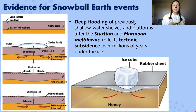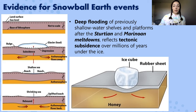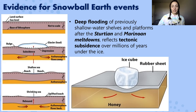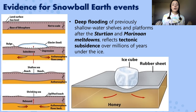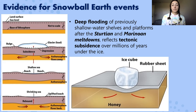The last piece of evidence is subsidence. Deep flooding of previous shallow water shelves and platforms after the Sturtian and Marinoan meltdowns suggests tectonic subsidence due to having been covered in ice for millions of years. This is expected — we already know that glaciers are strong enough forces to carve valleys and cause depressions in continental crust that later become filled with lakes, so seeing this subsidence after these glaciation periods is pretty much to be expected.